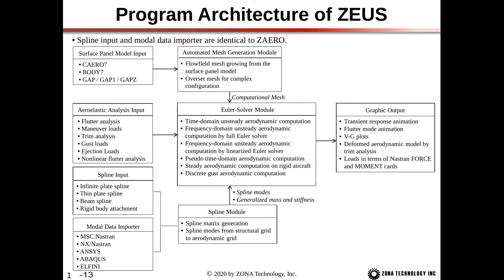Now we'll look at a more detailed program architecture of Zeus. The spline input and the modal data importer are identical to Z-Aero. In the input file, the surface panel model is defined using CAERO7 and BODY7 cards, plus GAP, GAP1, and GAPZ cards which help with the mesh generation. These input cards feed into the automated mesh generation module, where the flow field mesh grows from the surface panel model, including the overset mesh for complex configurations.